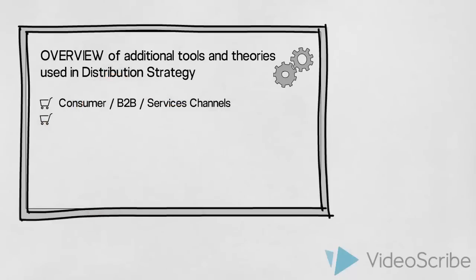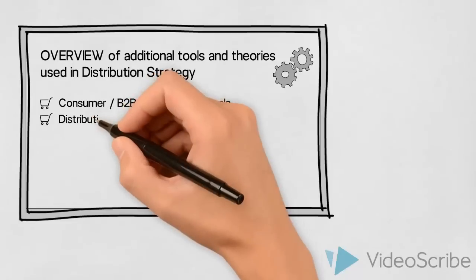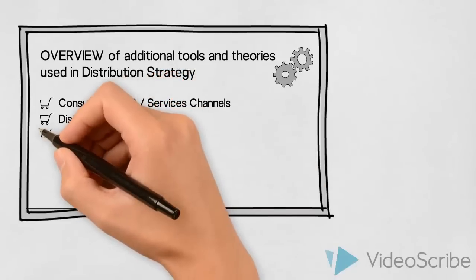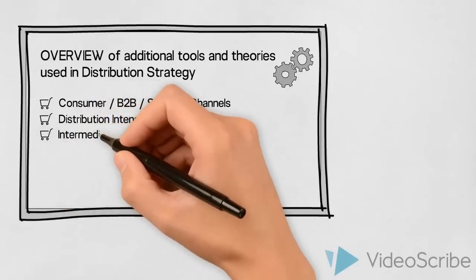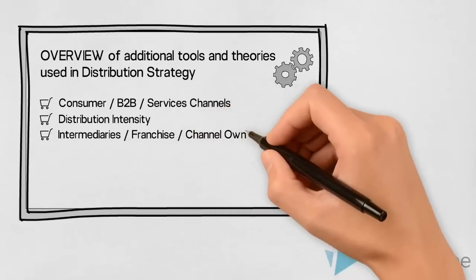Distribution intensity should be looked at, to what extent and in which context do we want our product or service to be available to the end consumers. Thirdly, we would consider whether to use independent intermediaries, setting up a franchise operation, or perhaps go for channel ownership.